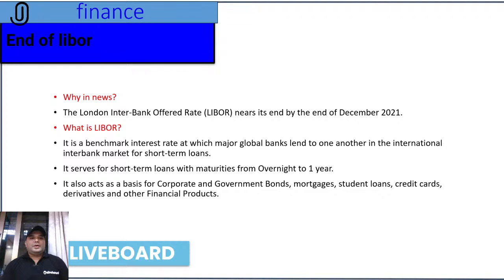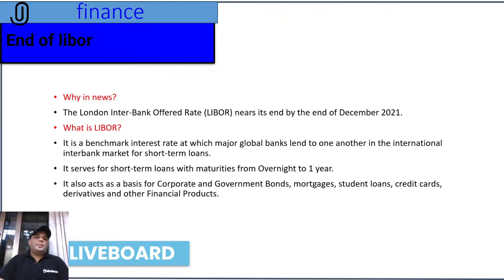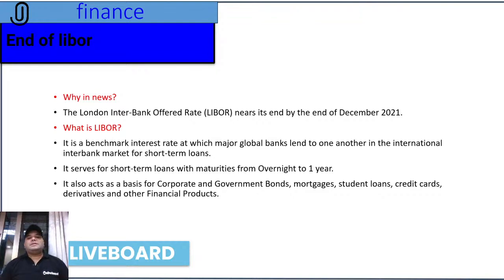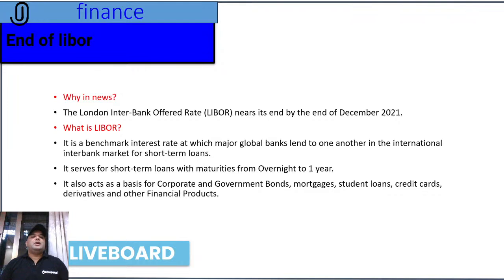Let's talk about LIBOR. LIBOR stands for London Interbank Offered Rate. The LIBOR has ended by December 2021 — that is the context of the news, and quite naturally it is important from an examination point of view. LIBOR is a benchmark interest rate at which major global banks lend to one another. For example, if Citibank, an American bank, has to lend to SBI, it will use the LIBOR rate. These pertain to international operations — the international interbank market for short-term loans.